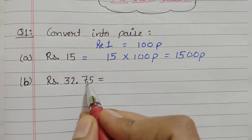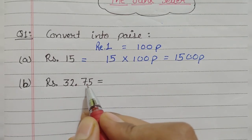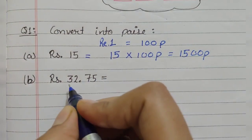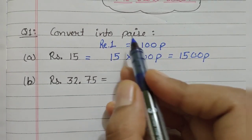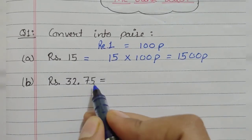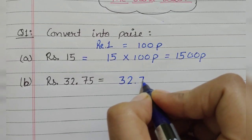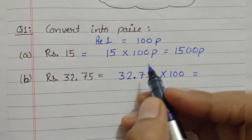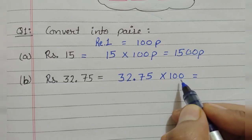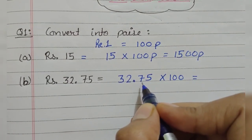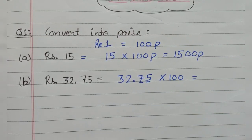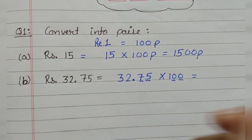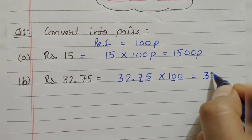And if the given money is in this form — that is 32 rupees and 75 paise — after this decimal we read it as paise. So here we have 32 rupees and 75 paise. To convert it into paise only, we will multiply this amount by 100. Just write 32.75 and multiply it by 100. If we multiply such numbers where one number is in decimal form and another has zeros, we count the number of places after this decimal — here we have 2 places, and here we have 2 zeros. So after multiplying, this decimal point gets vanished, and your answer is 3275.